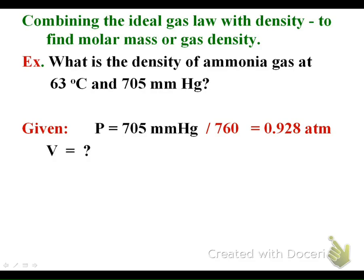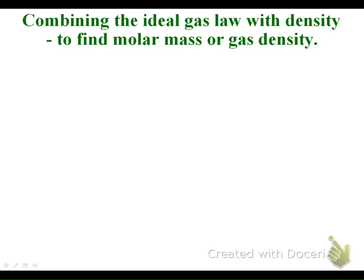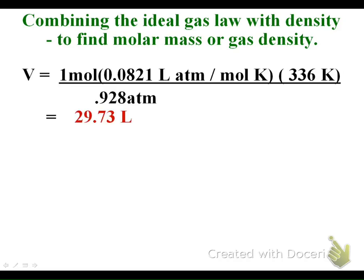Our volume is what we're trying to find. Our n, on this problem, assume one mole. If you're not given the n value in a PV=nRT problem asking about density, assume one mole. R is our given, 0.0821. Our temperature is 63 degrees Celsius, so we convert to Kelvin by adding 273. We get 336 Kelvin. When we plug that in, we're solving for volume and get 29.73 liters.